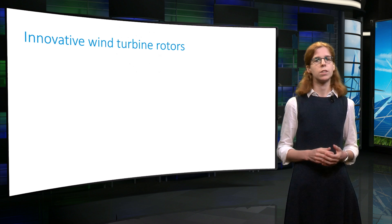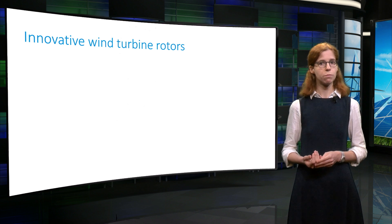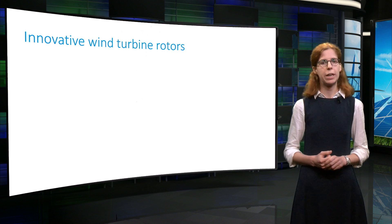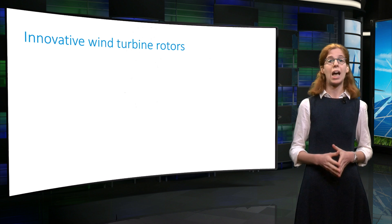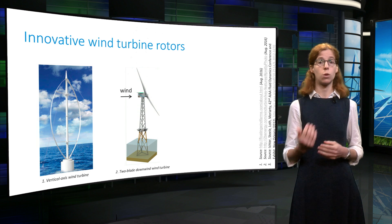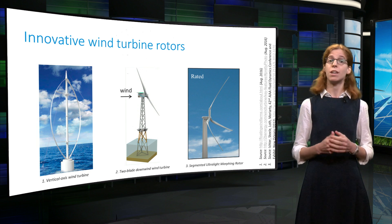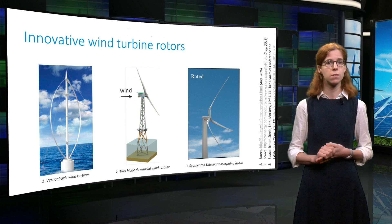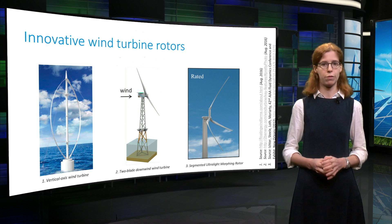With innovative foundations such as floating structures, the question also arises of whether we should change the wind turbine rotor. The horizontal axis wind turbine, commonly used onshore, might not be the economic optimum far offshore. Ongoing research projects are thus looking at other concepts, such as vertical axis wind turbines, two-bladed wind turbines placed downwind — that is on the backside of the nacelle — and flexible blades that can fold to sustain hurricane winds. This is only to name a few innovative concepts. The future will tell us if these ideas can substantially reduce the cost of energy offshore.